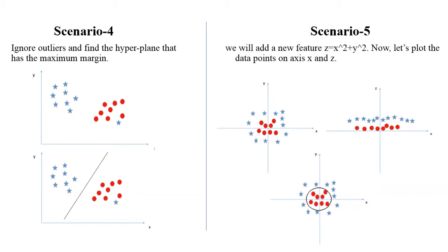Now, let's plot the data points on axes x and z. All values for z are positive because z is the squared sum of both x and y. Red circles appear close to the origin of x and y axis, so they take the lower value of z, but stars take the higher value of z because they are away from the origin.